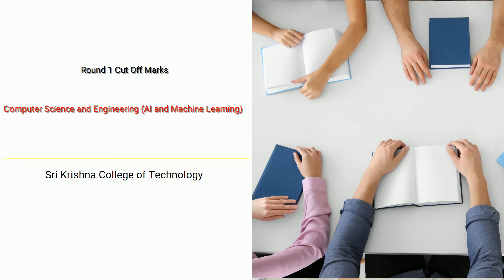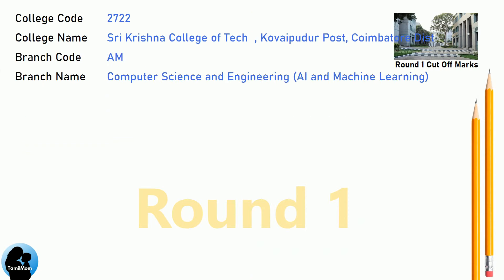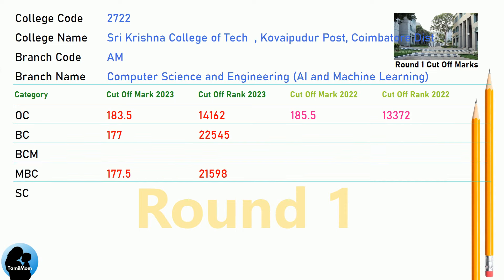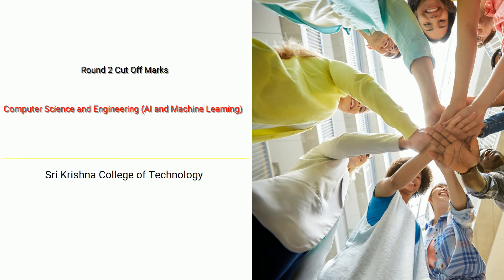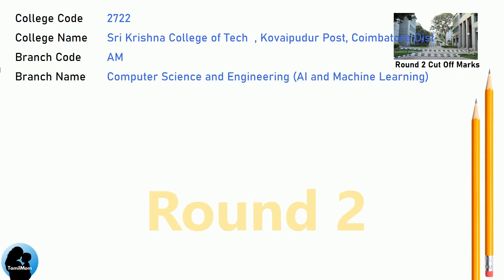DNA Round 1 Cut-off for Shri Krishna College of Technology in Computer Science and Engineering, AI and Machine Learning. DNA Round 2 Cut-off for Shri Krishna College of Technology in Computer Science and Data Science.